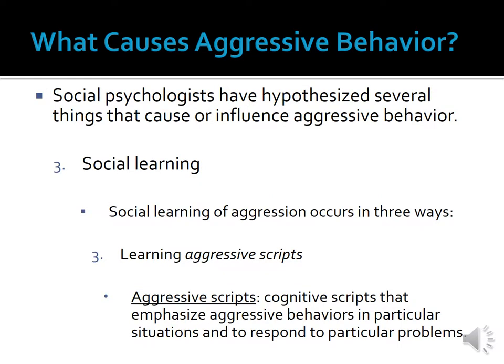The third way people learn when and how to act aggressively is through the learning of aggressive scripts. Aggressive scripts are cognitive scripts that emphasize aggressive behaviors in particular situations and in response to particular problems. Scripts are schemas that tell people how to act in particular social situations — aggressive scripts tell people that they should act aggressively in a particular situation. An example of an aggressive script would be: if a person makes fun of me, I am supposed to punch this person in retaliation. People learn aggressive scripts from their social environments — for example, aggressive scripts are often learned from significant others, as when a young boy learns from watching his abusive father that if his wife hollers at him, he should hit her to get her to stop.